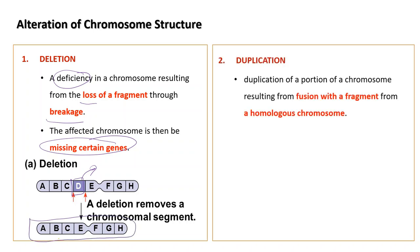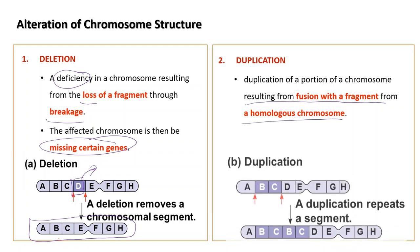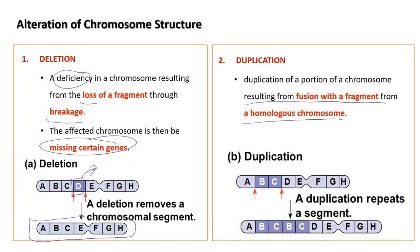The second alteration is duplication, where a portion of a chromosome is duplicated through fusion with a fragment of a homologous chromosome. For example, the segment labeled B and C is duplicated. Deletion and duplication are likely to occur during meiosis.